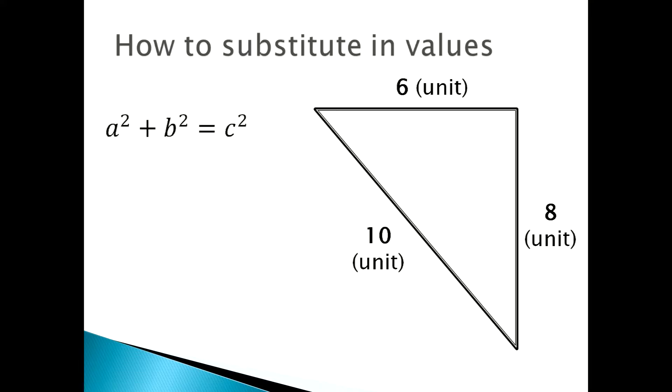So you always state your formula, which is a squared plus b squared equals c squared. Next, 6 squared plus 8 squared equals 10 squared. In a usual exam, you wouldn't have the 10 squared, it would have been c squared.